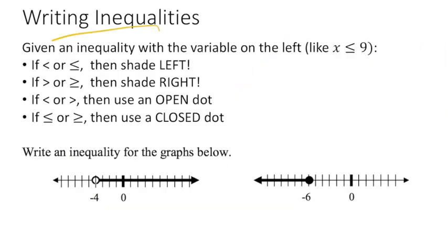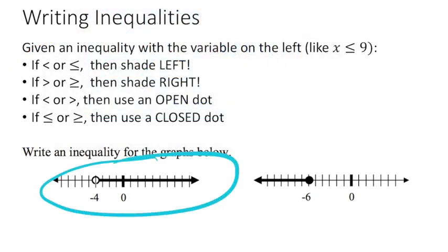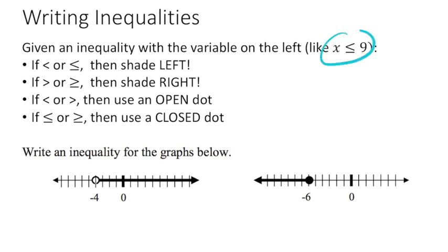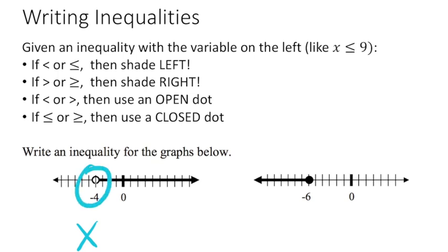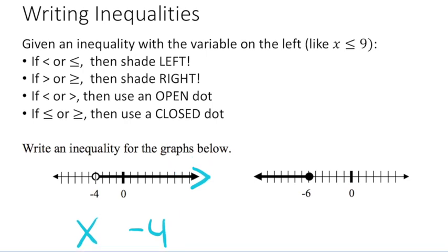Now let's use these same rules to go backwards. If I start with a graph, let's try to write the inequality. Well we always like to have x on the left. The rules are easier to follow when the variable is on the left. So I'm going to start by writing x, and wherever the point is, is the number we're interested in, and that's negative 4. Now what we have to figure out is what goes in between. What inequality symbol? Well we shaded to the right. Notice that the right arrow is filled in, and look at what inequality symbol that shows. That's a greater than. Shade to the right means greater than.